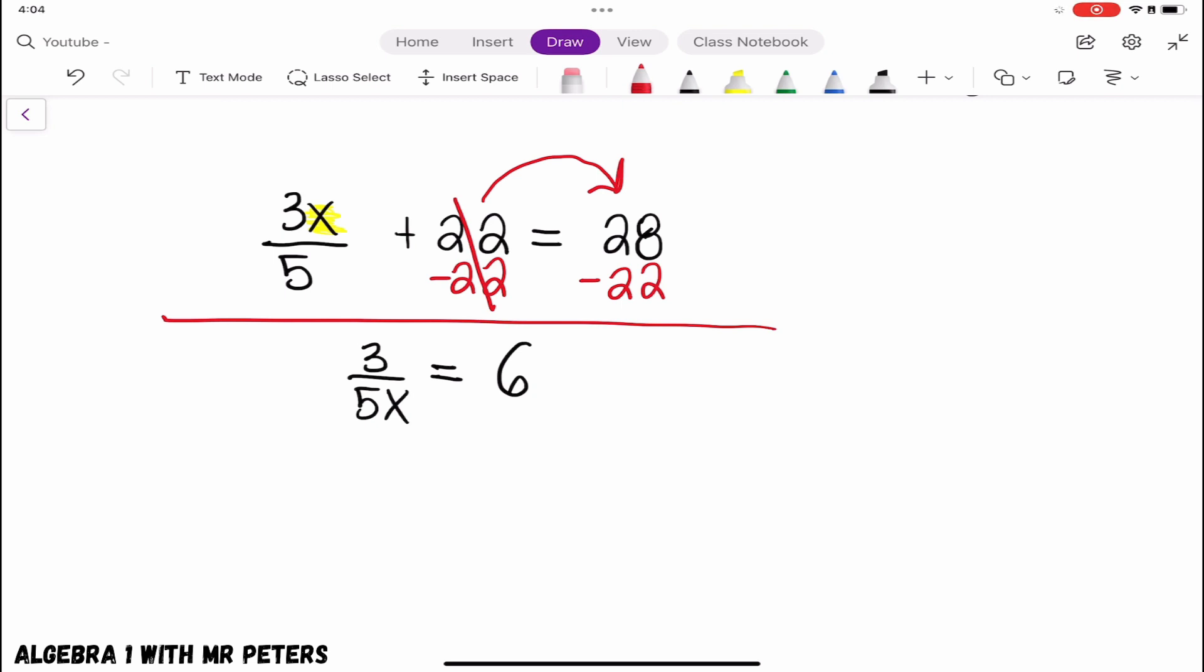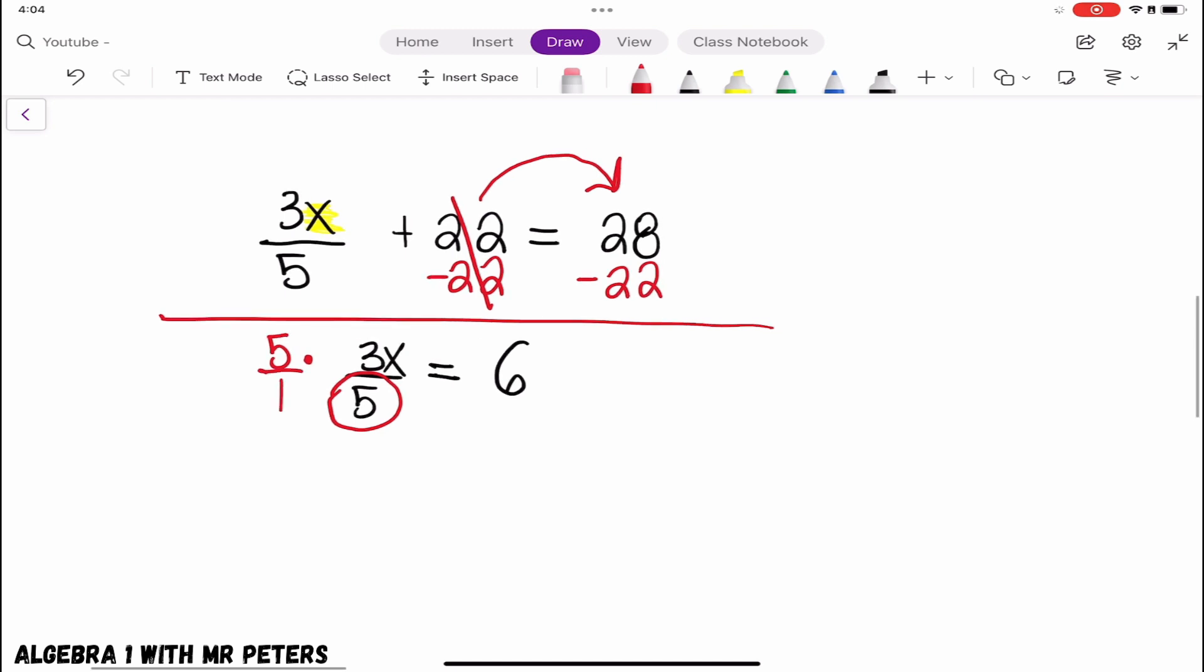So when you split the fraction, and I can't believe I wrote my x down there. I'm sorry. When we split the fraction, we're going to get rid of the denominator. And the way that we're going to do that is we're going to multiply the denominator by itself. Just cross, cross cancel. And we'll go on the other side and do the same thing.